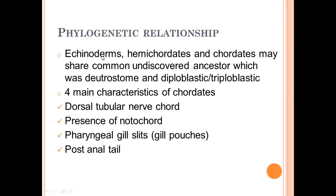Echinoderms, hemichordates, and chordates may share a common undiscovered ancestor. The ancestor is still undiscovered. But the ancestor that was a deuterostome — this ancestor may have been diploblastic or triploblastic.